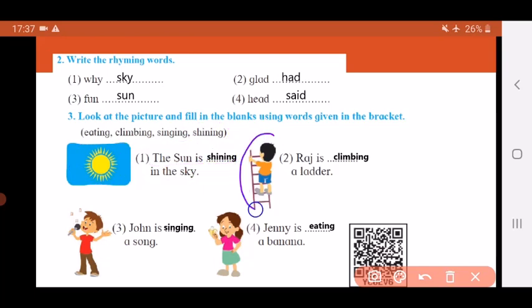Second picture. It shows you a boy who is climbing up the ladder. Seedhi chadh raha hai. The sentence is: Raj is dash a ladder. So the answer will be: Raj is climbing a ladder.